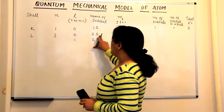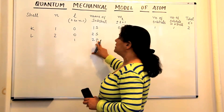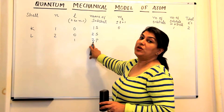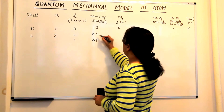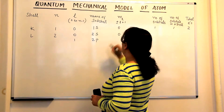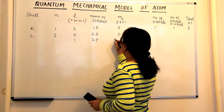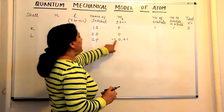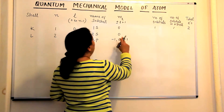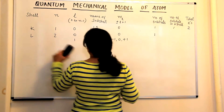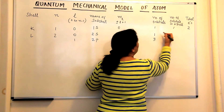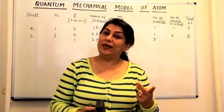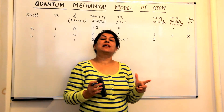L equal to 0 means it is an S orbital; L equal to 1 means it is a P subshell of the second shell, so we name it 2P. The value of ML for 2S would be 0. For 2P, since L is 1, it will be minus 1, 0, and plus 1 — that is 3 values, so 3 orbitals. There is 1 S orbital and 3 P orbitals in the L shell, giving 4 total orbitals, and therefore the second shell has a capacity of 8 electrons.